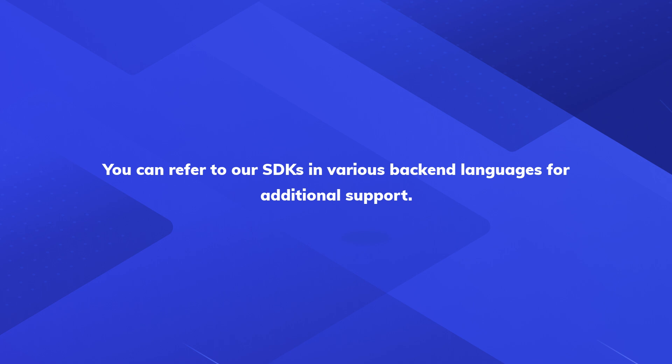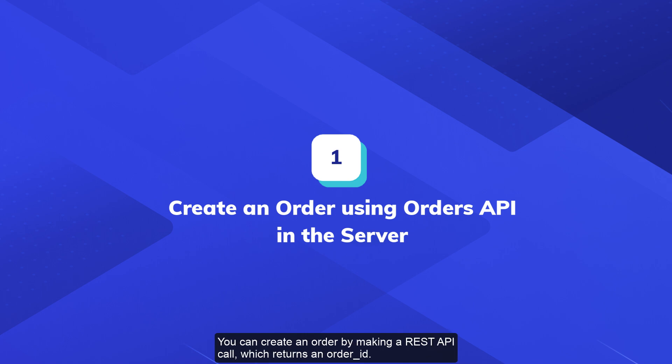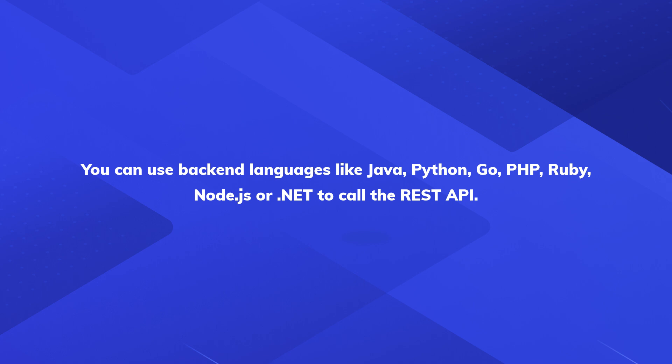You can refer to our SDKs in various back-end languages for additional support. Let us use the Razorpay Orders API to create an order. An order is an important step in the payment acceptance cycle. You can create an order by making a REST API call which returns an order ID. You can use back-end languages like Java, Python, Go, PHP, Ruby, Node.js, or .NET to call the REST API.